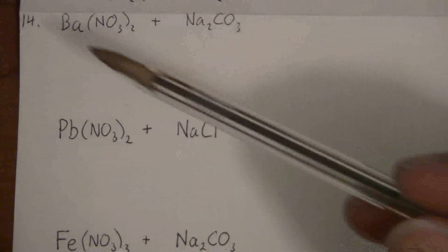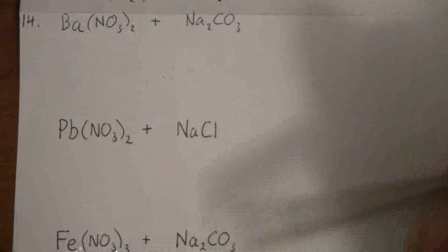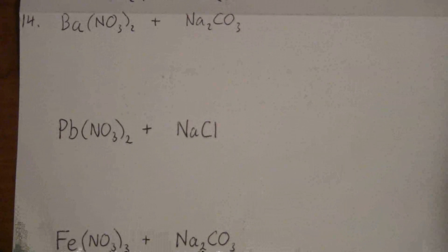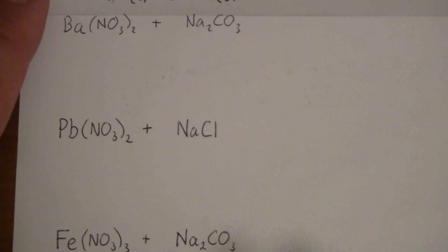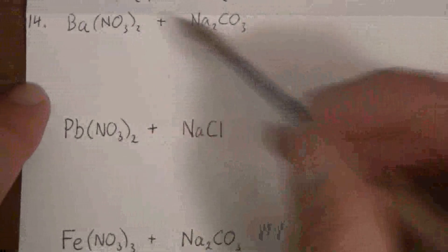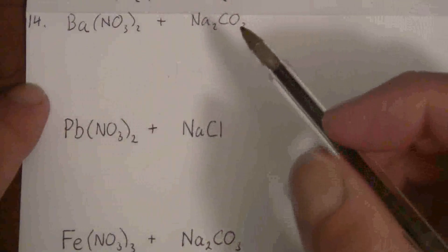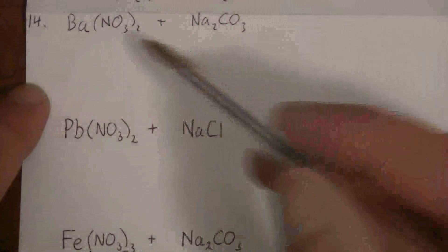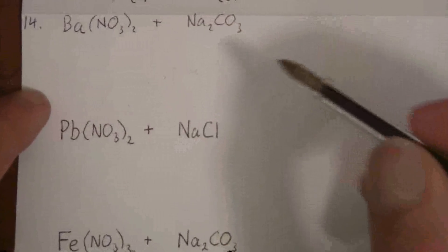Moving on to question 14, I'm going to pick three different examples to illustrate a few things, and that should help you work through the rest. These are a few more net ionic equations where we have the reactants — there are nine different drops we did that formed a precipitate, and these are three of them I'll be looking at.